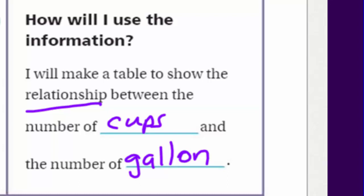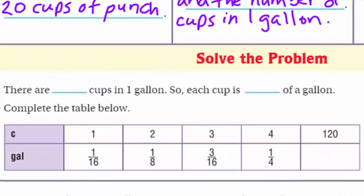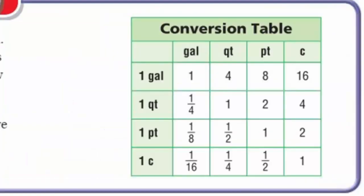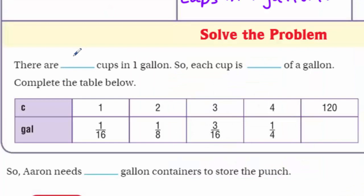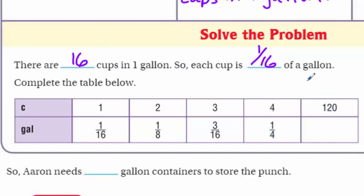Since there are blank cups in one gallon, let's go to the top of the conversion chart — you can see it right there: there are 16 cups in one gallon. That's the information we need to use. Each cup is 1/16 of a gallon because we have 16 parts of that one gallon. So one cup is 1/16, and two cups would be 1/8.